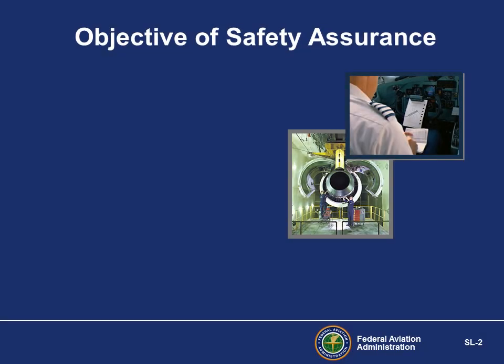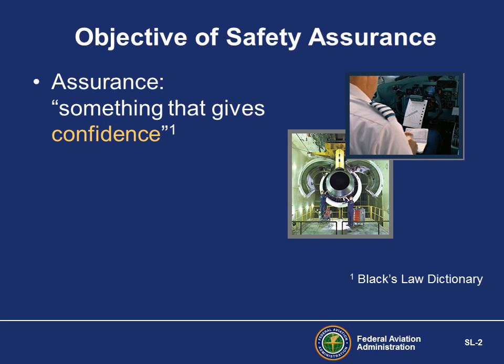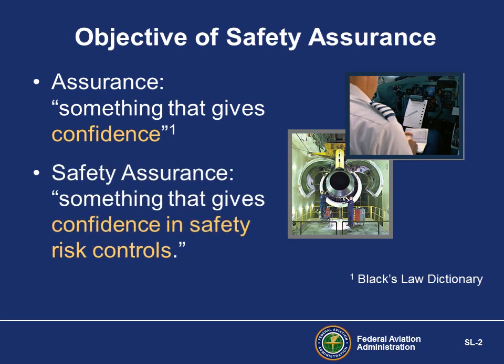Safety Assurance is the second major component of an SMS. Black's Law Dictionary defines assurance as something that gives confidence. Safety Assurance gives us confidence in our safety risk controls. A properly administered safety assurance process provides confidence that the organization is meeting or exceeding its safety objectives by controlling risk. Safety Assurance helps control the practical drift which happens as a natural part of any organization, and gives us confidence that risk controls remain effective.